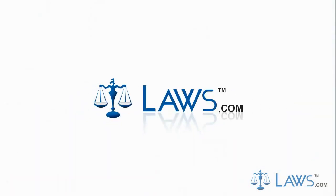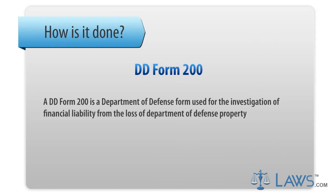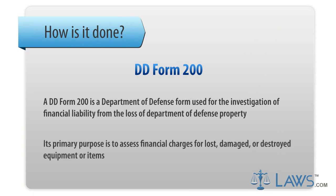Laws.com Legal Forms Guide. A DD Form 200 is a Department of Defense form used for the investigation of financial liability from the loss of Department of Defense property. Its primary purpose is to assess financial charges for lost, damaged, or destroyed equipment or items.